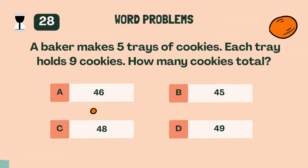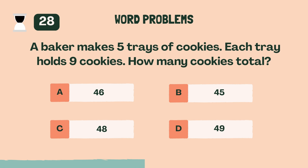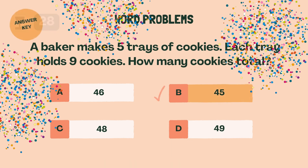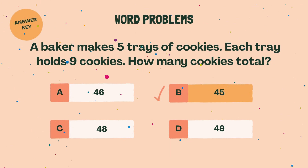A baker makes 5 trays of cookies. Each tray holds 9 cookies. How many cookies total? B. 45.